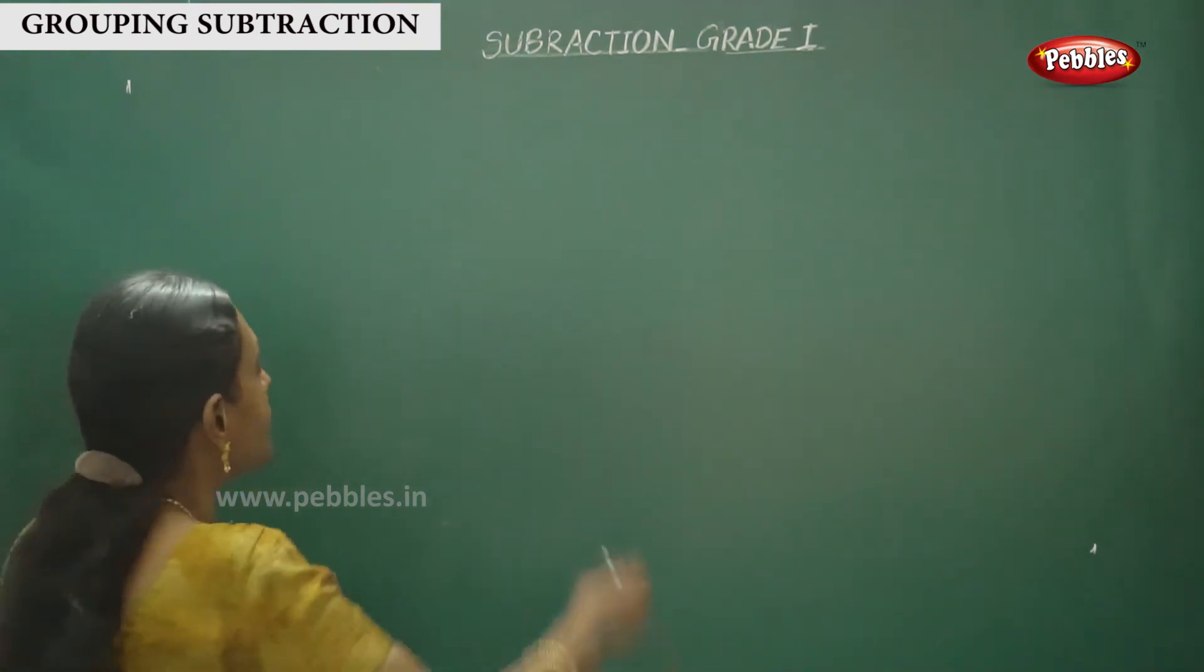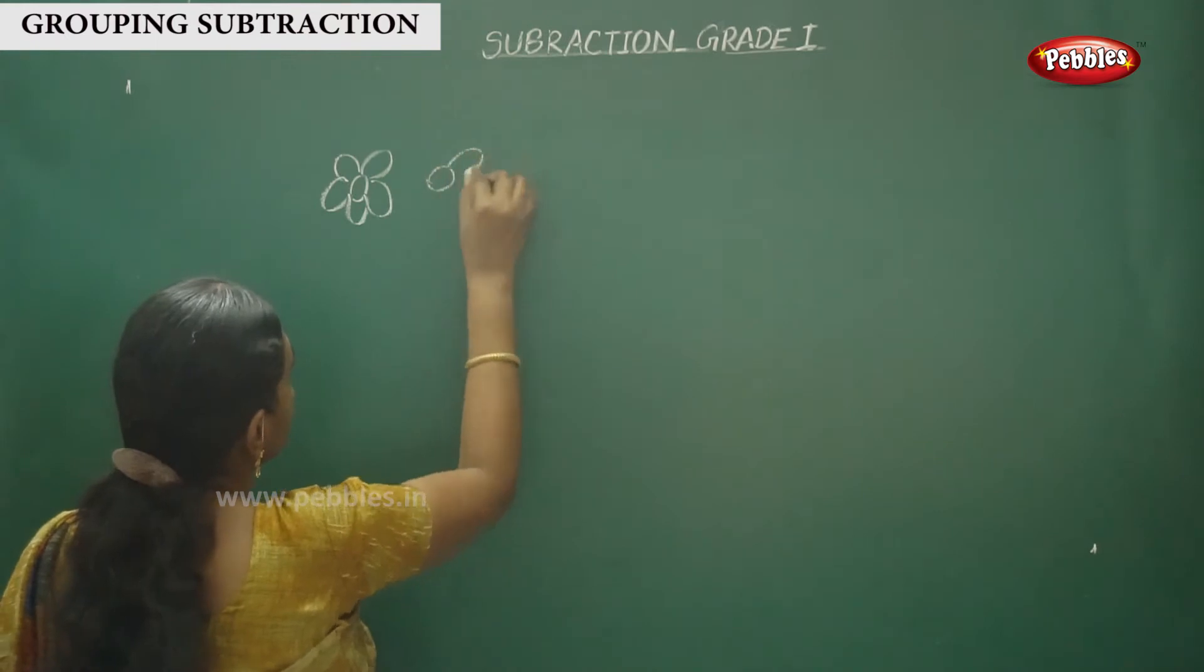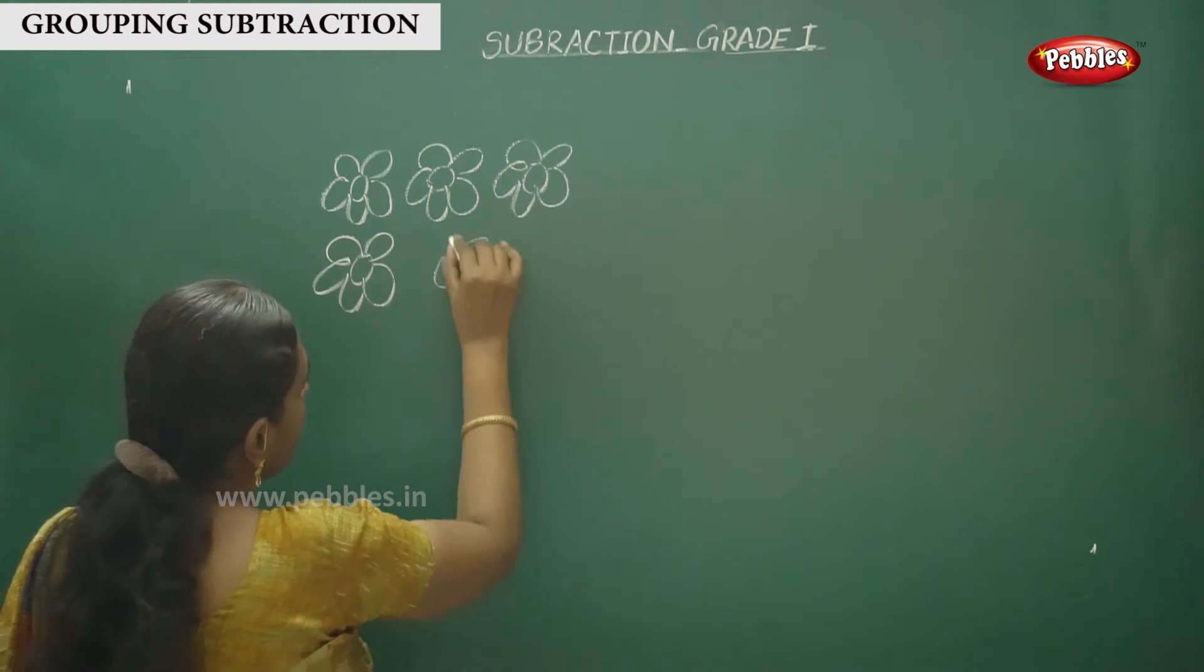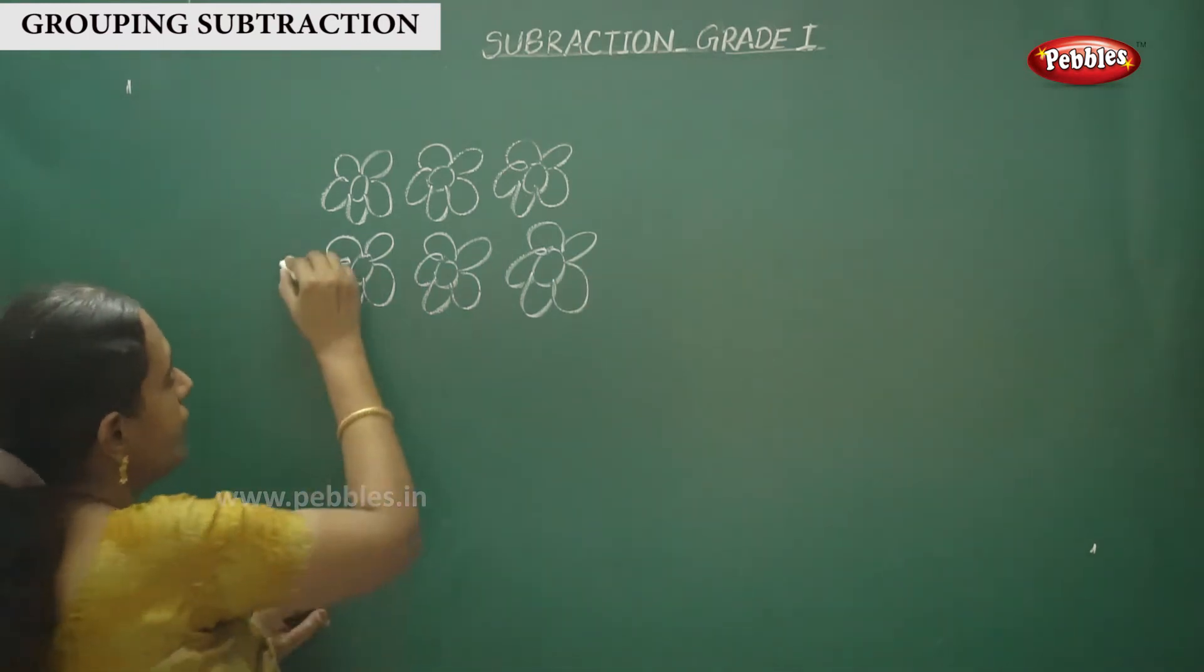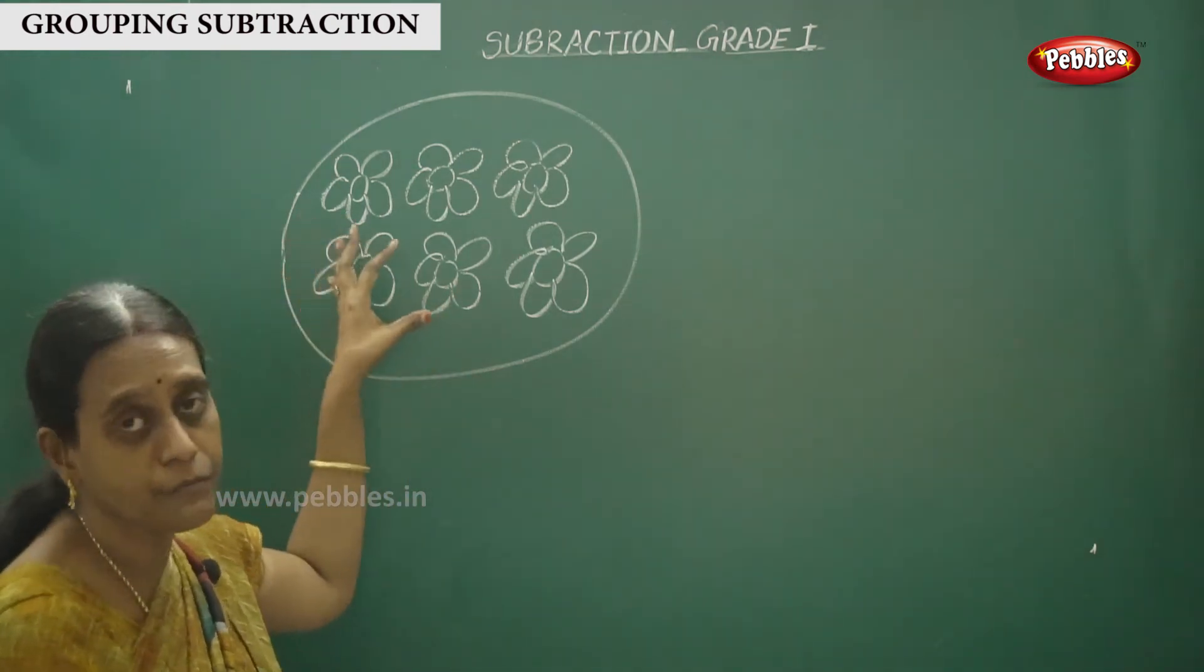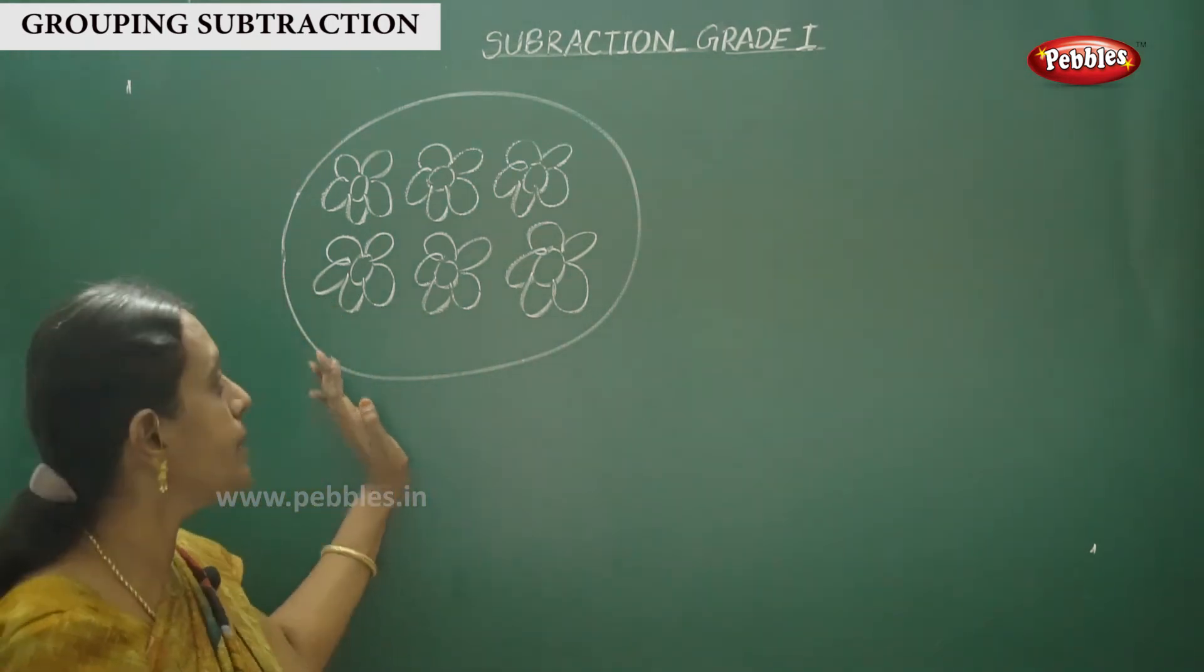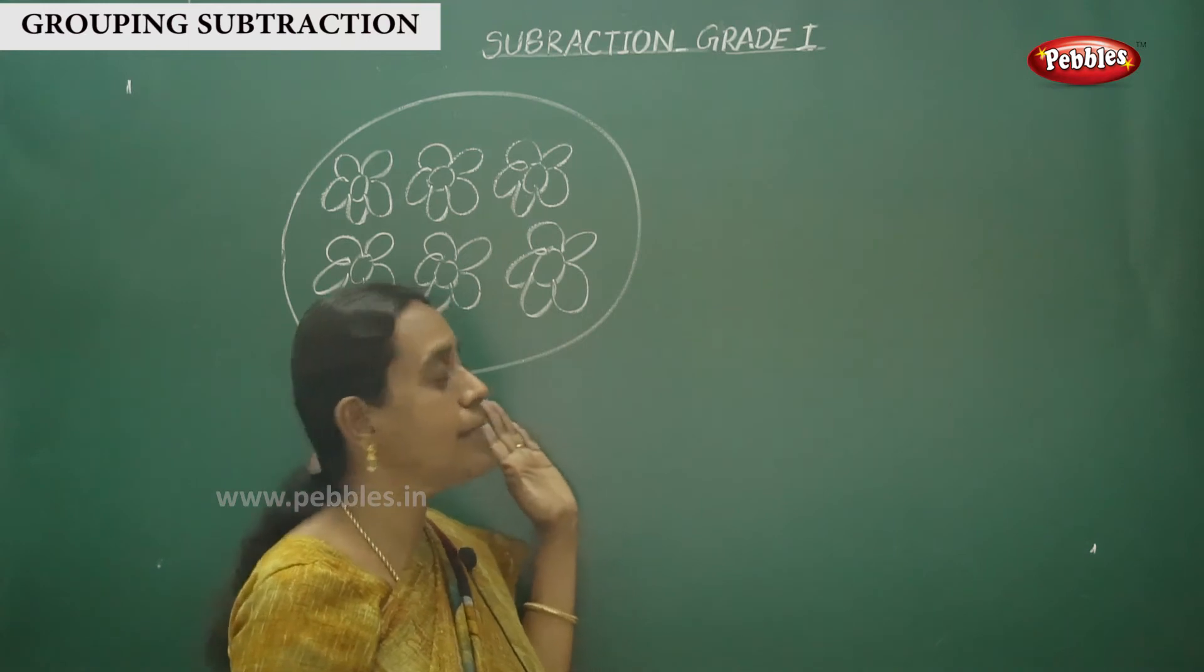Children, let me see some groups. Here I have to draw flowers. I have to draw 6 flowers. Count it first, one group. How many flowers are here? Six. Count the elements. How many elements are there? 1, 2, 3, 4, 5, 6. Six flowers are here.